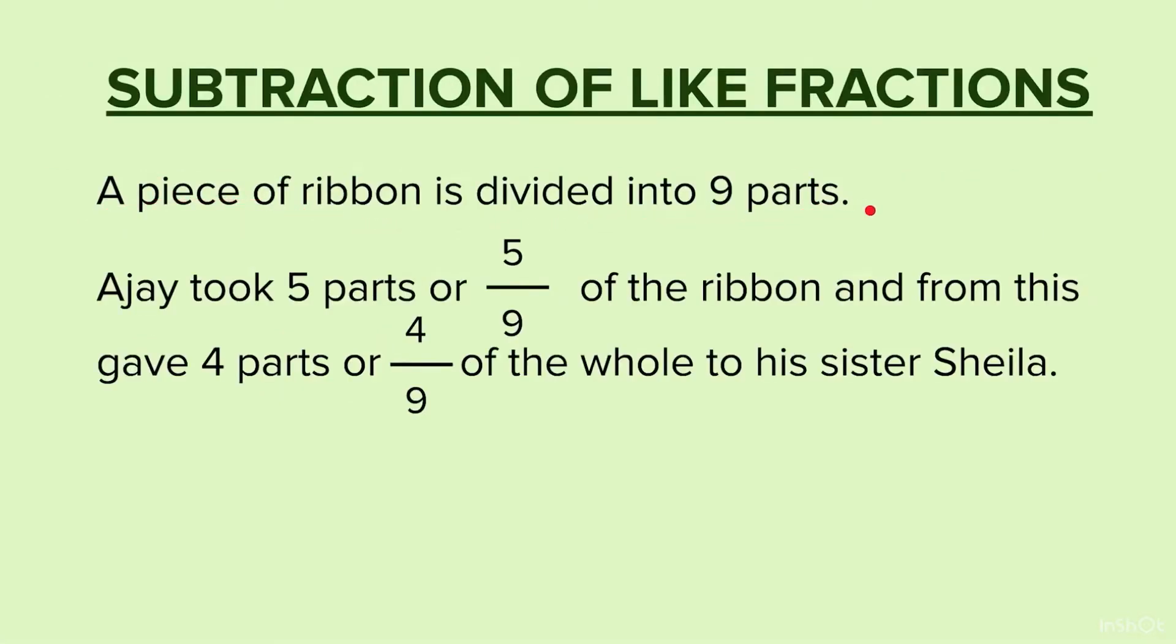A piece of ribbon is divided into 9 parts. Ajay took 5 parts or 5 by 9 of the ribbon from this. He gave 4 parts or 4 by 9 of the whole to his sister Sheila.